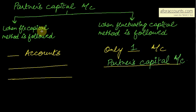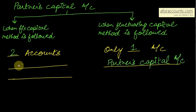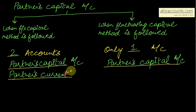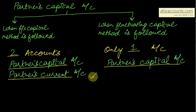When the fixed capital method is followed, the capital remains fixed. So you will have to make two accounts. These two accounts are: one is the partner's capital account, and the other is the partner's current account. For entries like salary, commission, drawings, interest on drawings, and many more adjustments, you will use the partner's current account. We will first understand what goes into the partner's capital account and what goes into the partner's current account.